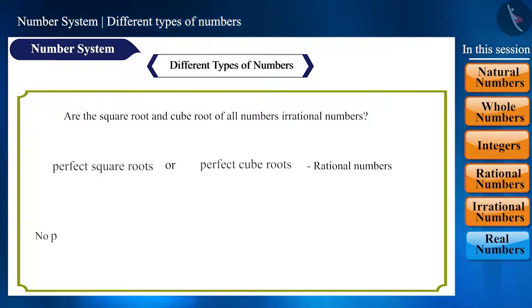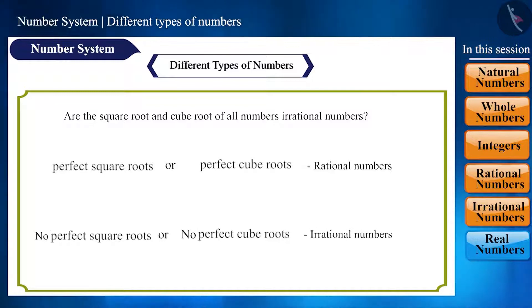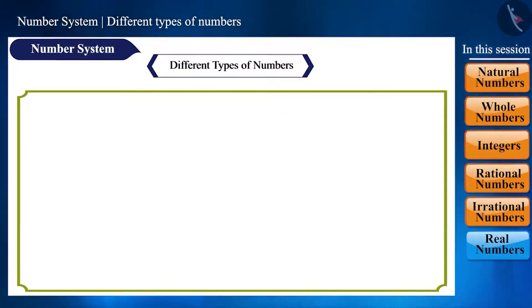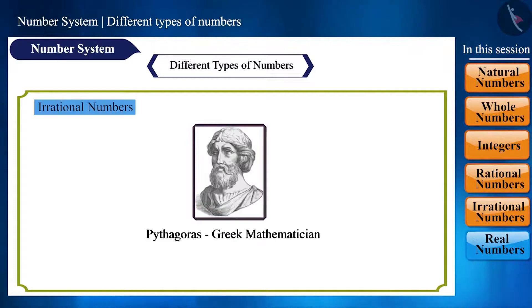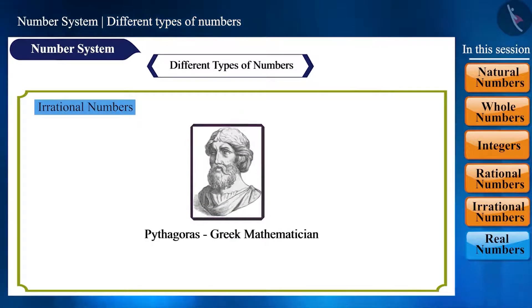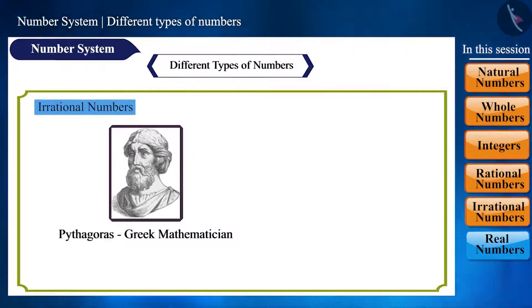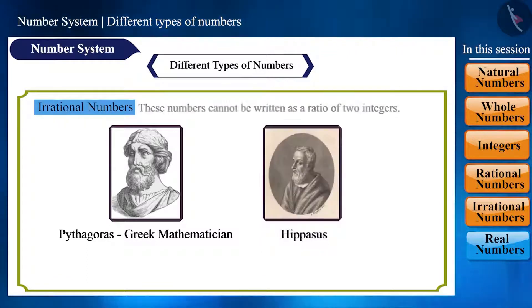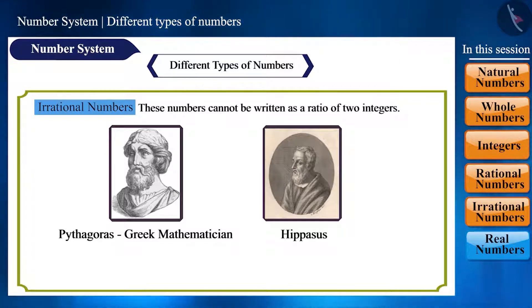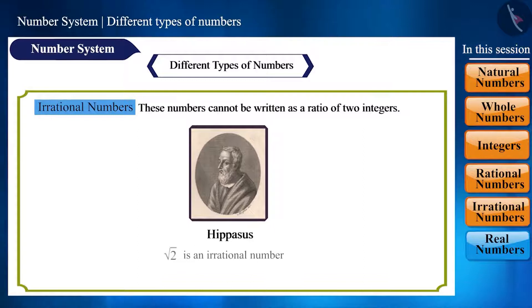Numbers that do not have a proper or perfect square root, cube root, etc. are called irrational numbers. Irrational numbers were first detected by the Greek Pythagorean, Hippasus of Croton, who said that these are numbers that cannot be written as a ratio of integers. He proved that root 2 is an irrational number.